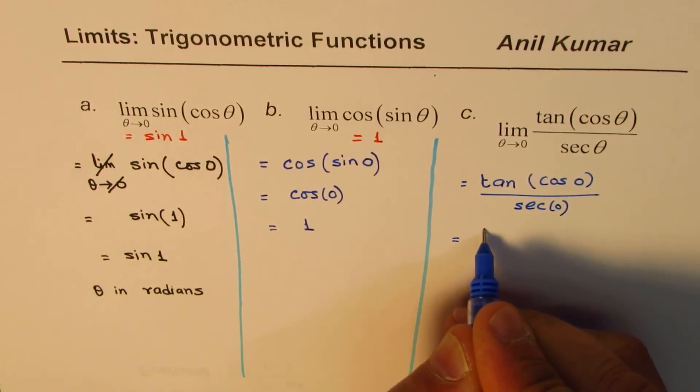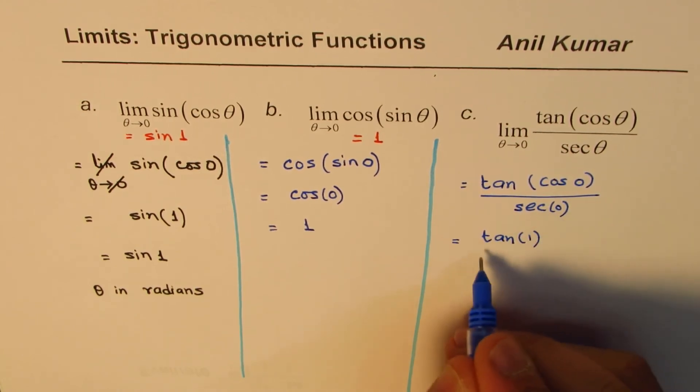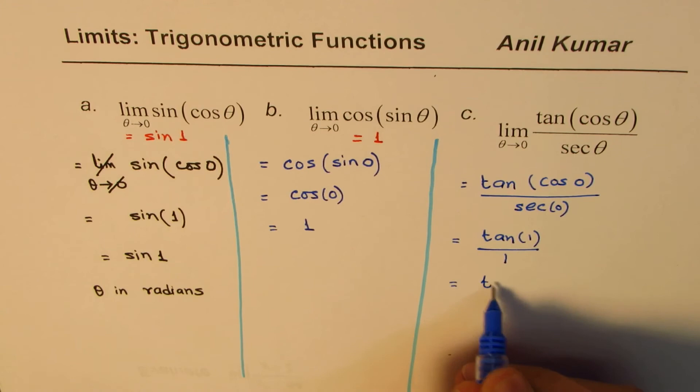So we get tan, cos of 0 is 1. So we get 1. So what we get here is tan 1.